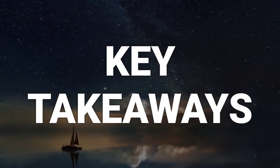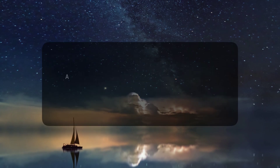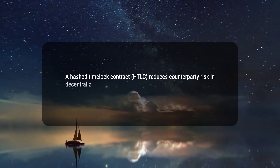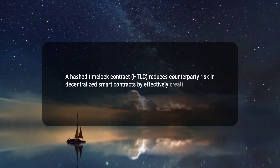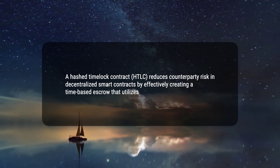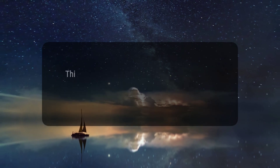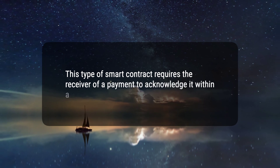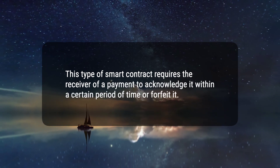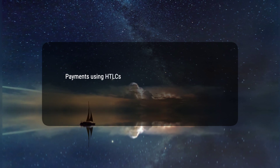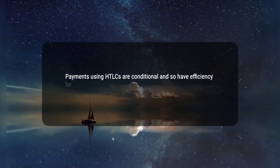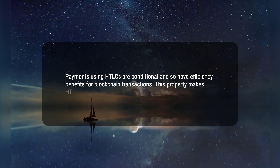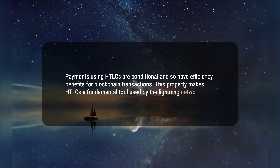Here are three key takeaways. 1. A Hash Timelock Contract, HTLC, reduces counterparty risk in decentralized smart contracts by effectively creating a time-based escrow that utilizes a cryptographic passphrase. 2. This type of smart contract requires the receiver of a payment to acknowledge it within a certain period of time or forfeit it. 3. Payments using HTLCs are conditional and so have efficiency benefits for blockchain transactions. This property makes HTLCs a fundamental tool used by the Lightning Network.